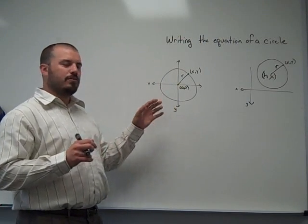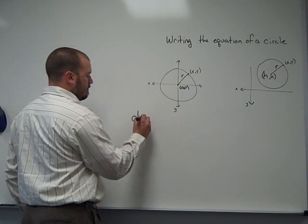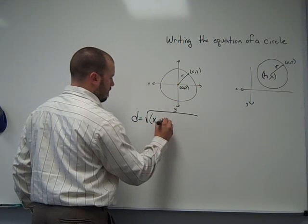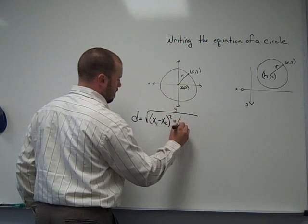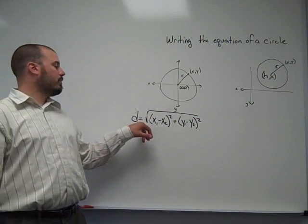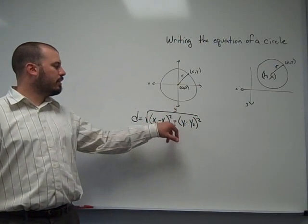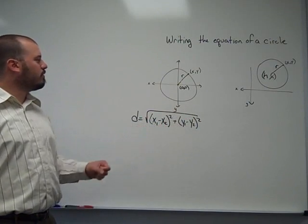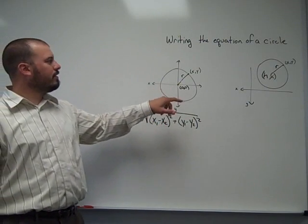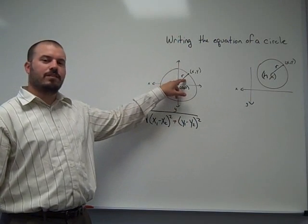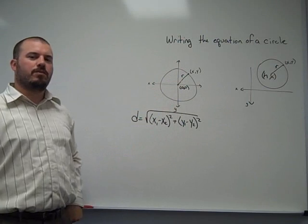All right, so distance formula is the square root of x1 minus x2 quantity squared, plus y1 minus y2 quantity squared. That's the distance formula. And again, the definition says it's the set of all points that are the same distance r from some given point, the center.